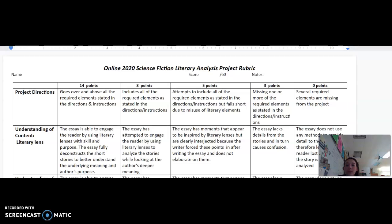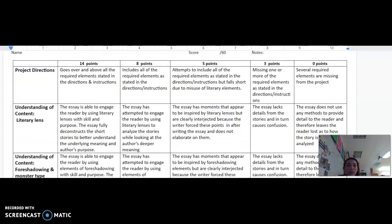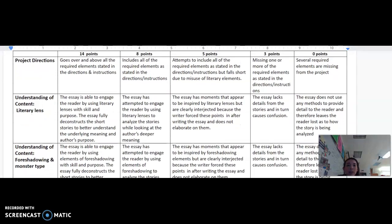So if you chose to do the literary analysis option where you're going to analyze two different short stories, this is how your grade will be broken down. Our first three categories are split with 14 points as the highest maximum each, being that you follow the project directions as the first category.